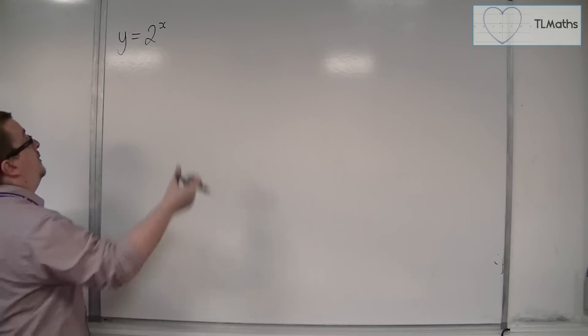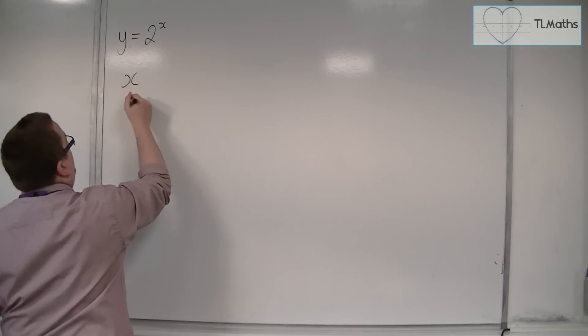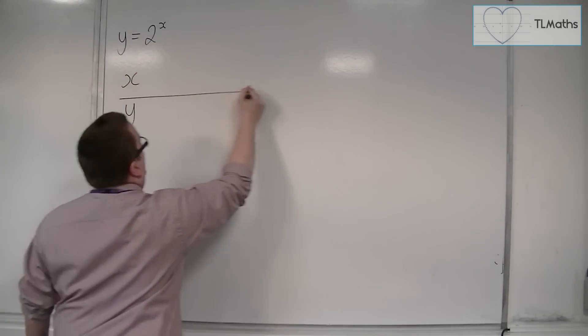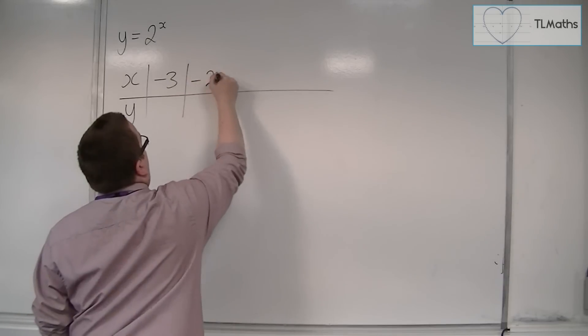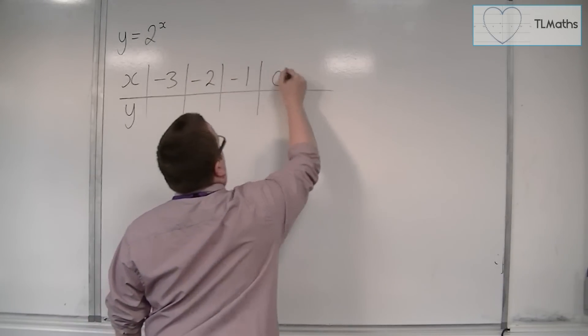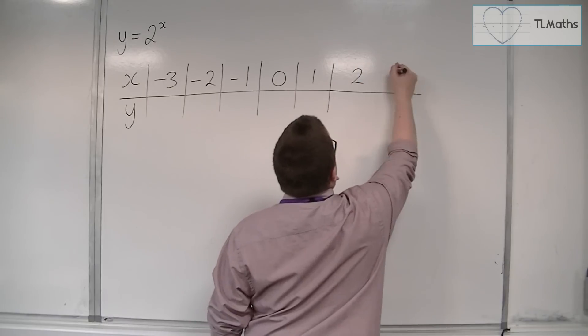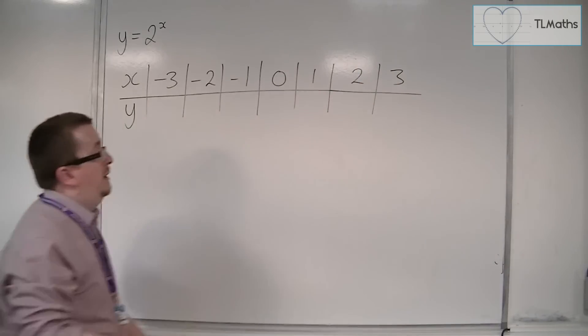Let's choose some x values. If we choose some x values, we're going to get some respective y values out of it. So let's choose minus 3, minus 2, minus 1, 0, 1, 2, and 3, for example.